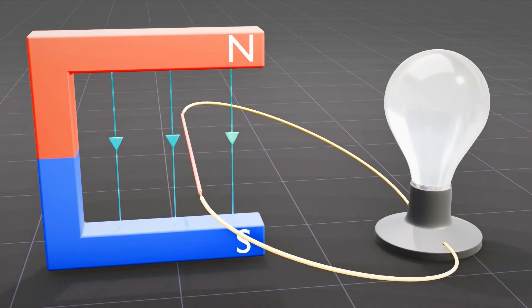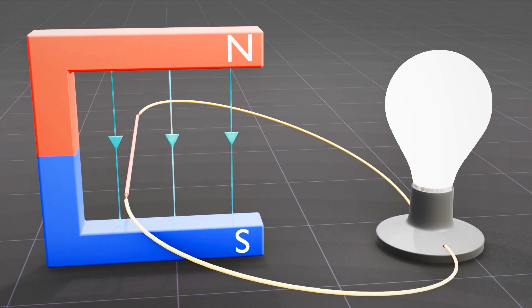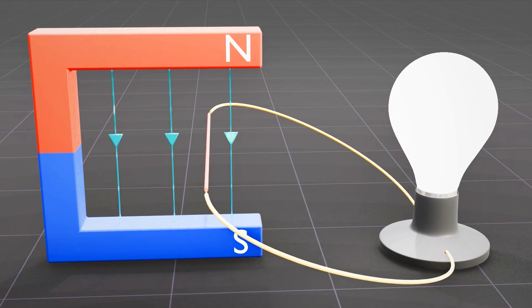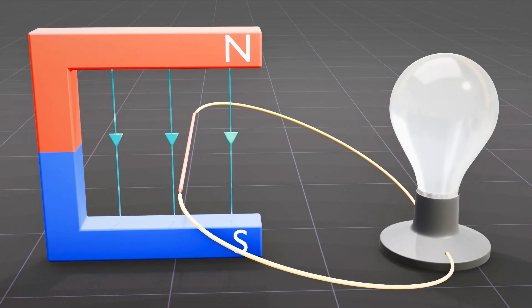However, when the wire is moved perpendicular to the magnetic field, crossing the magnetic field lines, it encounters a change in the magnetic field, leading to the flow of current through it.